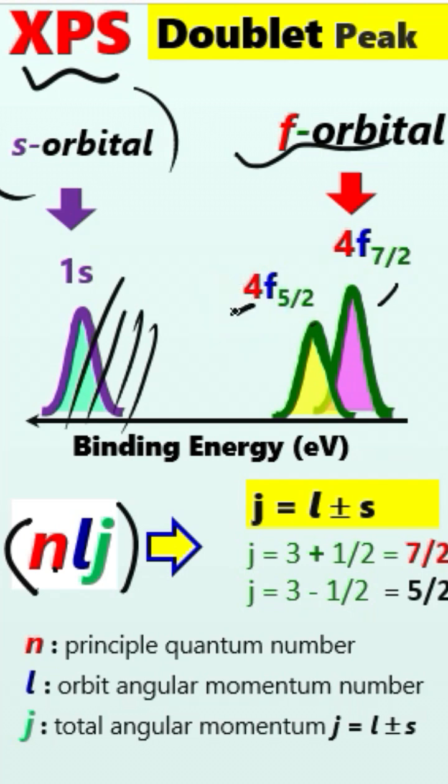This l represents the orbital angular momentum, and for the f-orbital we have l equal to 3.